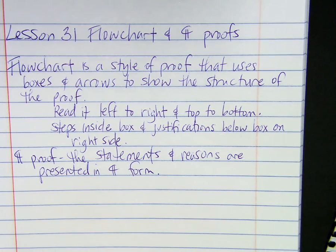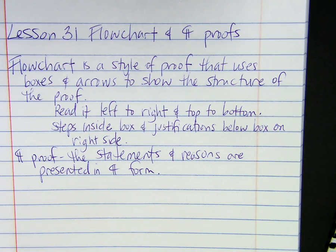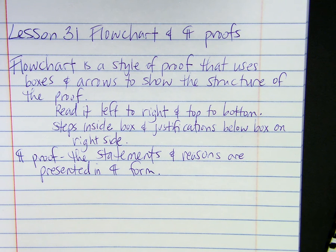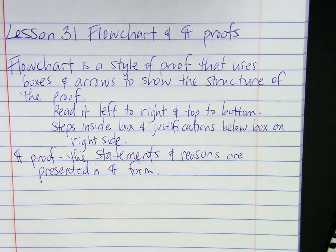I just wanted to say really quick — if you look at example two, part of the proof is to draw a line through a point, and they show a dotted line going through point A. That's called an auxiliary line, and usually you can draw those just to aid in your proof when you need an extra line. Okay, that's the end of the lesson.